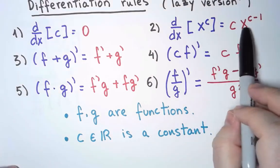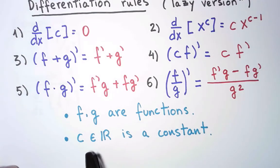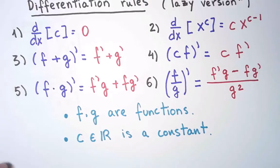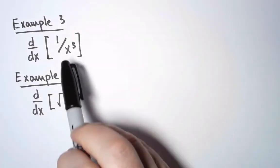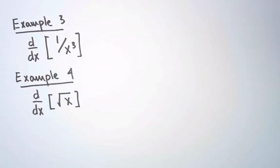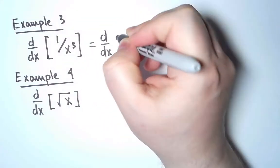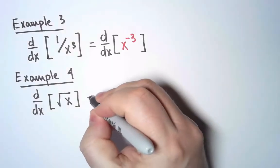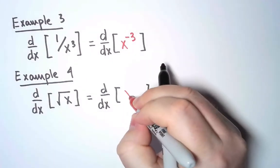Look at the power rule. The exponent can be any real number. It doesn't have to be a positive integer. I can rewrite these two functions as powers. I can write 1 over x³ as x to the minus 3, and I can write the square root of x as x to the 1 half.